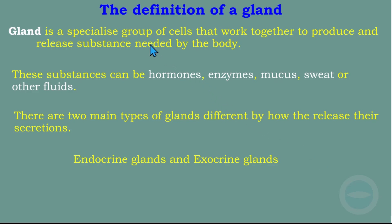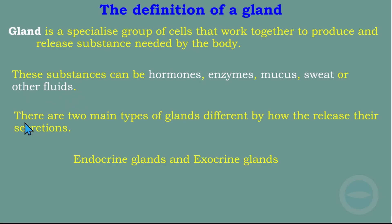First of all, I would like to define what a gland is. A gland is a specialized group of cells that works together to produce and release a substance needed by the body. This substance can be hormones, enzymes, markers, sweat, or other fluid. There are two main types of gland, differentiated by how they release their secretion: endocrine glands and exocrine glands.